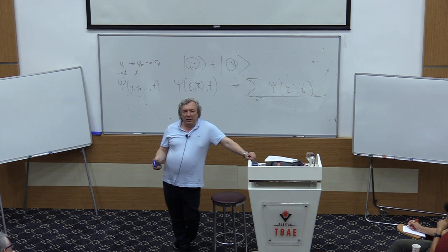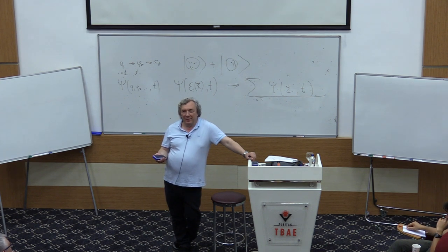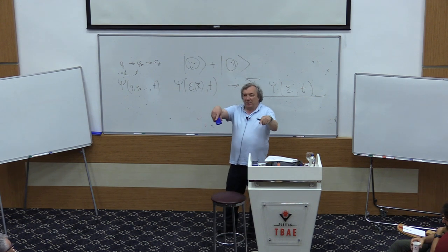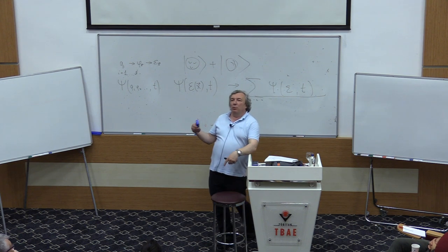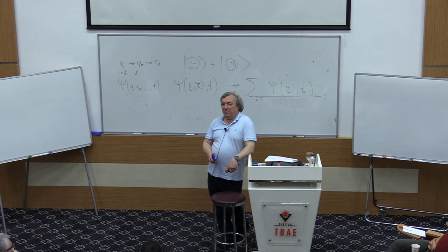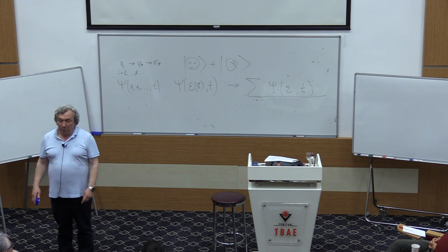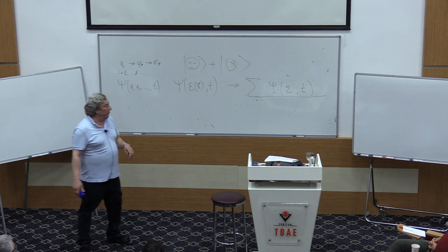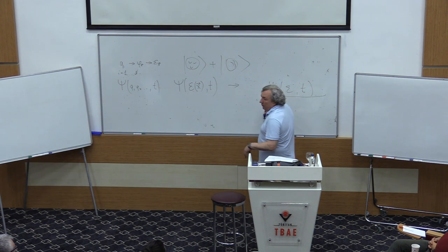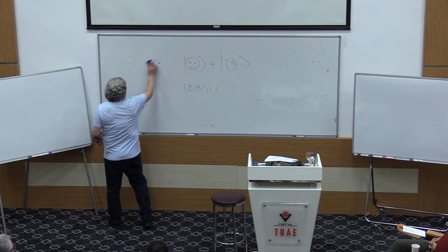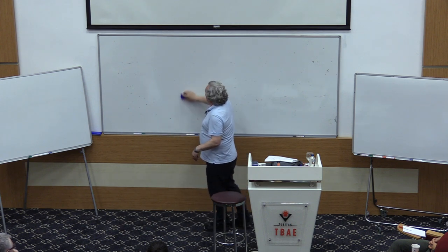Have you heard how people explain the two-slit experiment with and without a detector? When you have a detector that registers which slit the electron passed through, and when you have no detector, you get a different result — the double-slit interference pattern. Leon Cooper wrote that everything can be described in terms of the Schrödinger equation. Thanks to quantum mechanics I made many friends — I discussed this with Gell-Mann, Leon Cooper, Ginzburg, and Markov. Cooper came to the same conclusion.